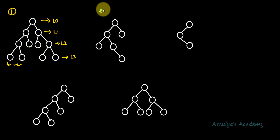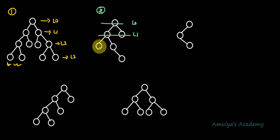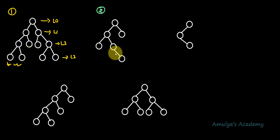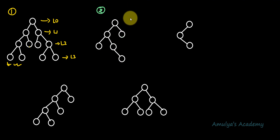In the next example, level 0 and level 1 are completely filled, but level 2 is not completely filled and it is not the last level — so this is not a complete binary tree.